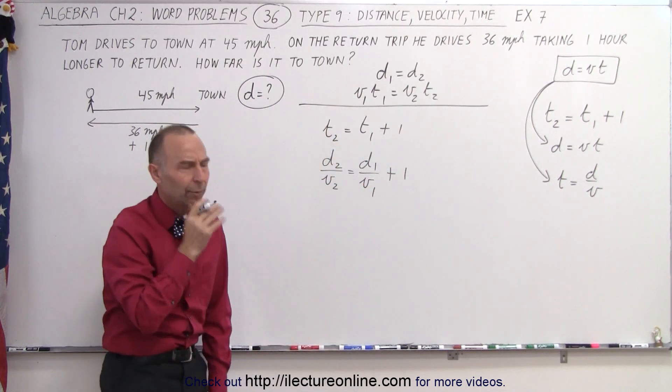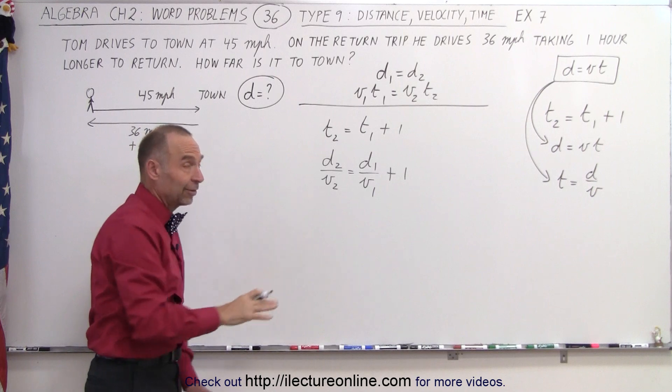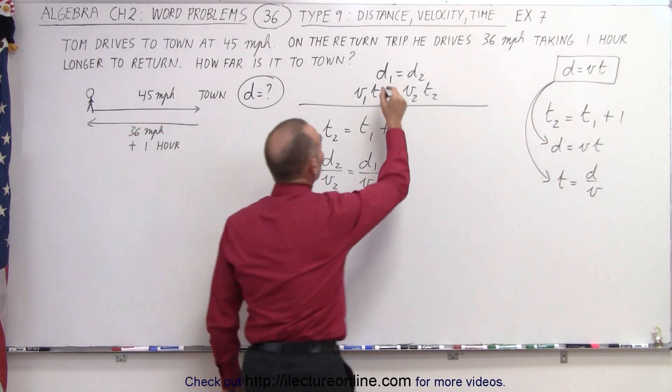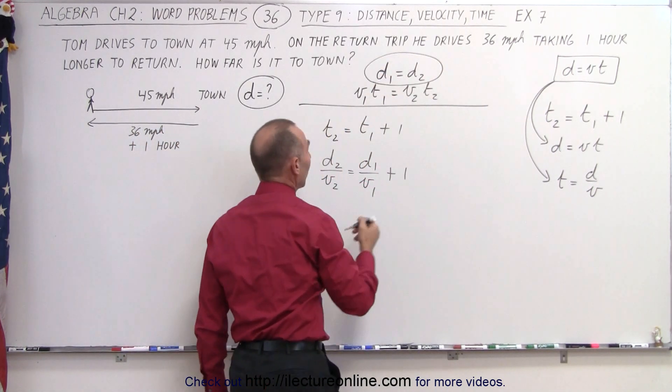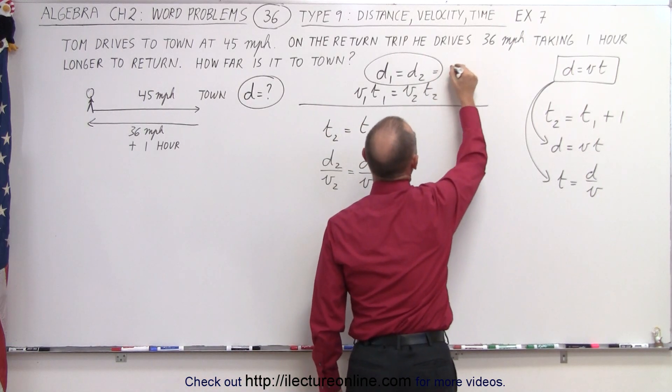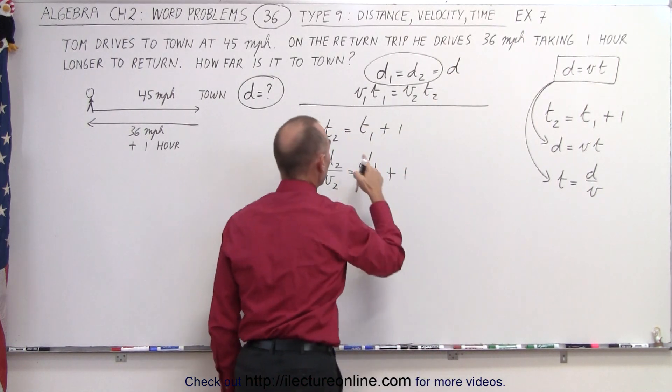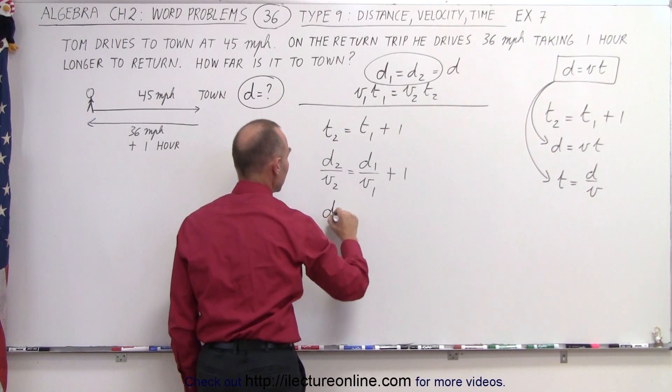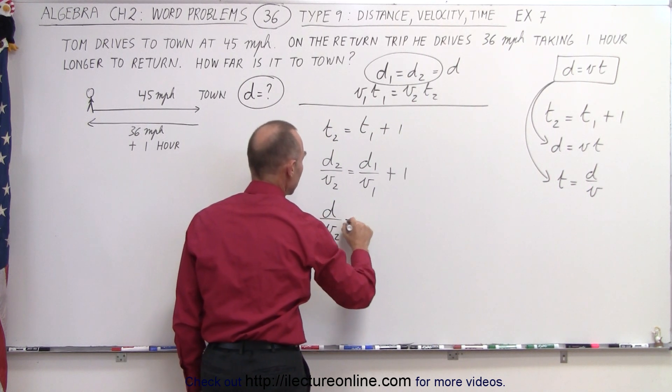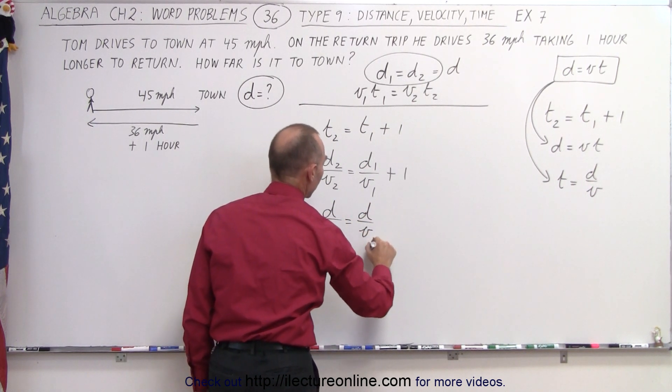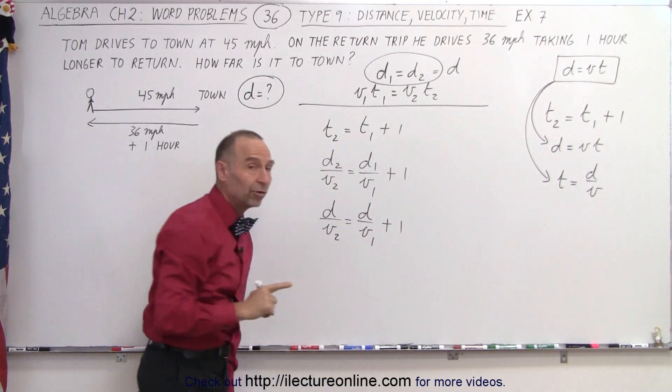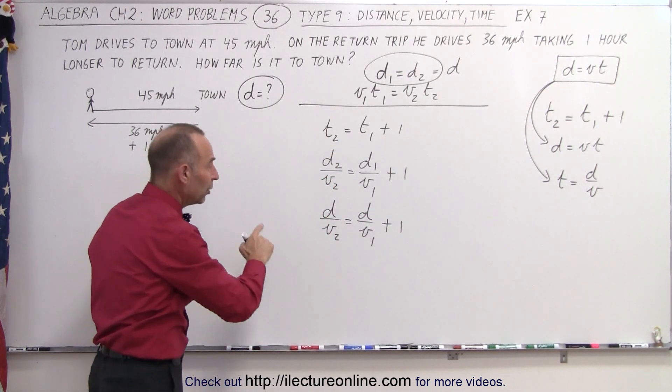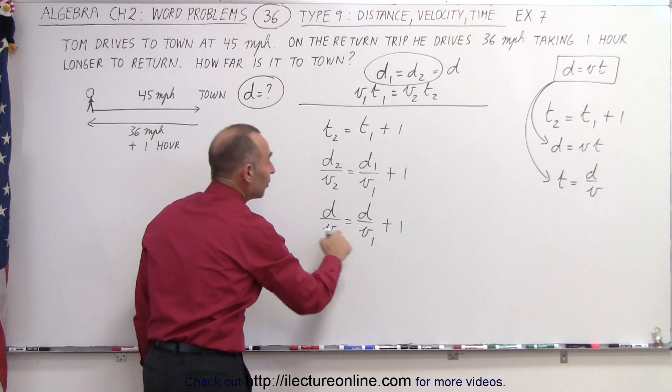Then you say, wait a minute, we don't know distance. That is true, but we do know that the two distances are the same. So what we can say is that this is simply equal to D. And so when we then rewrite this equation as D over V₂ equals D over V₁ plus 1, then notice in this case there's only one unknown, D, because V₂ and V₁ are known.